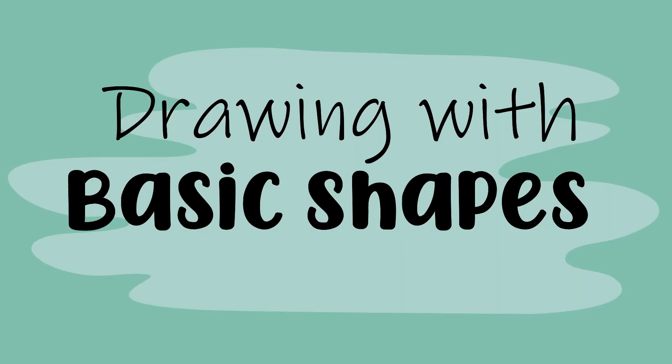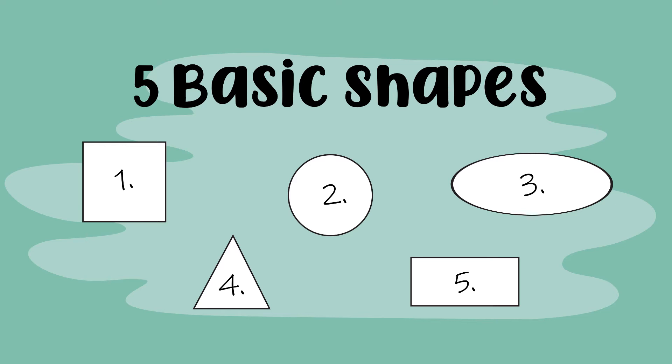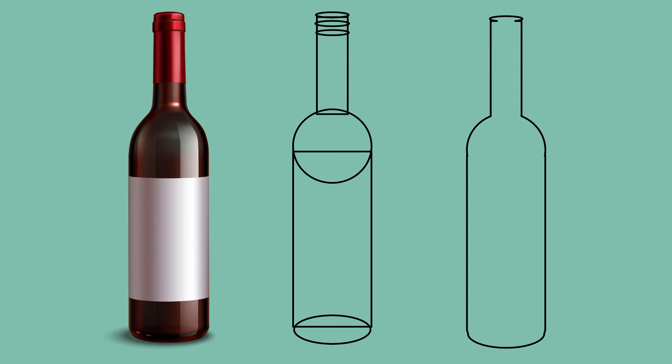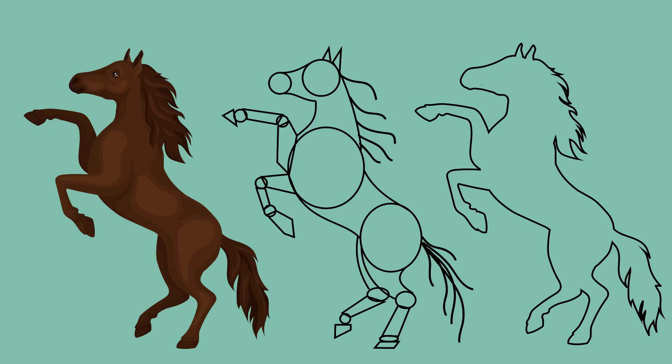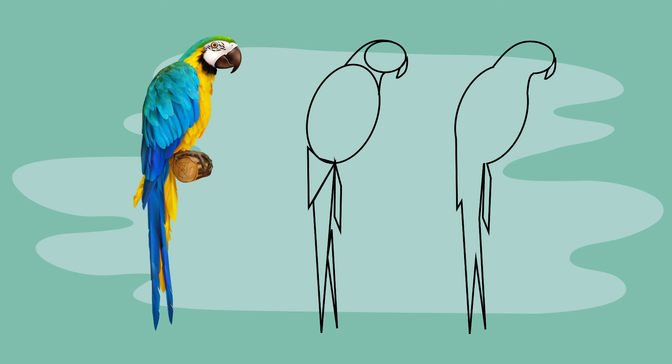Drawing with basic shapes. As artists we need to learn how to see the world around us using basic shapes. We can simplify everything into five basic shapes. Learn how to draw these five shapes and you can draw anything. This approach to drawing removes all anxiety because you will never draw a wine glass, a horse, or a hand again — only these five shapes. All complicated objects can become easy to draw when we isolate them into basic geometric or organic shapes.